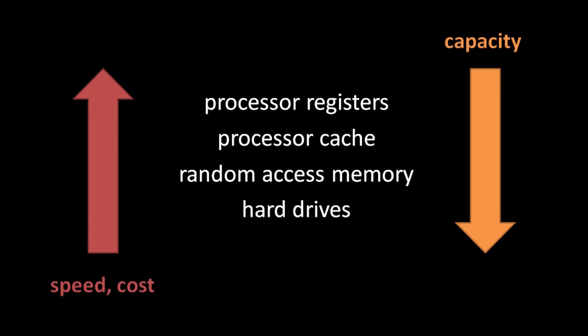On systems with this cache behavior, a very effective optimization strategy is to maximize locality — to keep the bytes of your code and data as close to each other as possible. If the bytes of memory needed by a processing-heavy part of your code are scattered far away from each other, they are less likely to all be in the cache at once, meaning that the CPU is more likely to have to wait for reads of memory as it does the work.